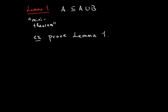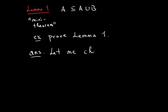In order to prove this, you want to look at the symbol and treat the two sides as separate entities. You can assume your premise, and your goal is to prove your conclusion. To prove Lemma 1, you first assume some element within A — let's call it alpha. Let me choose an arbitrary alpha in A.